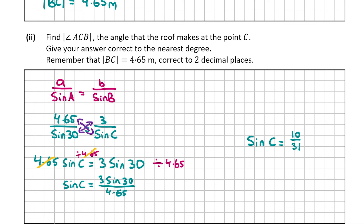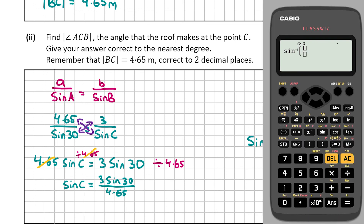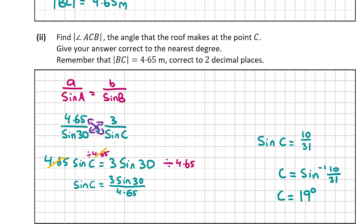We don't want sin C — we just want angle C. To find an angle from a trigonometric ratio, we invert the ratio using sine inverse. So C = sin⁻¹(10/31). Press Shift then sine on the calculator, then enter 10/31. That gives 18.819...°, which to the nearest degree is 19 degrees. So the angle C is equal to 19 degrees. That's the answer for E part 2, worth 5 marks. That's the final part of the question — thank you very much for watching and I hope I helped.